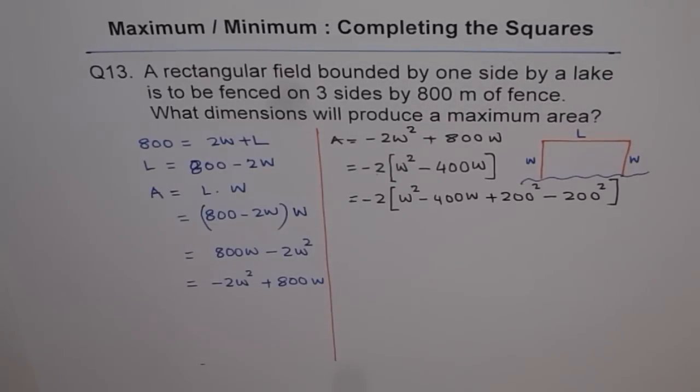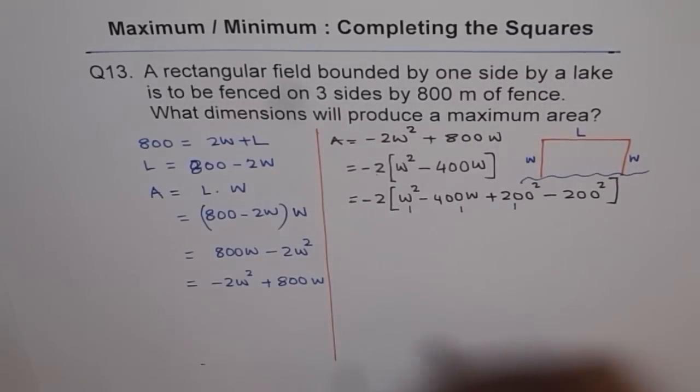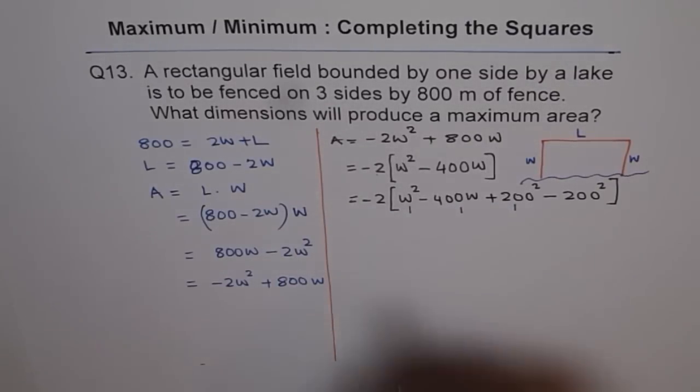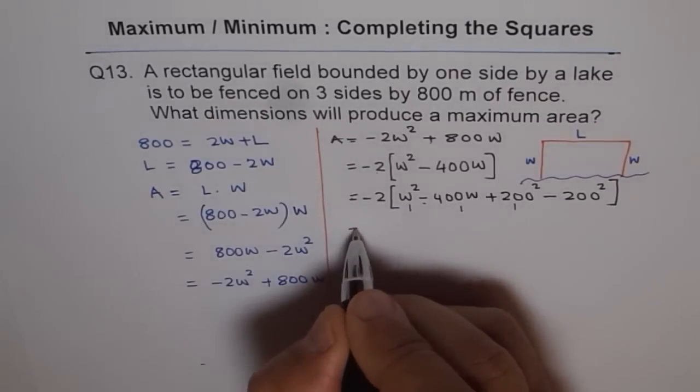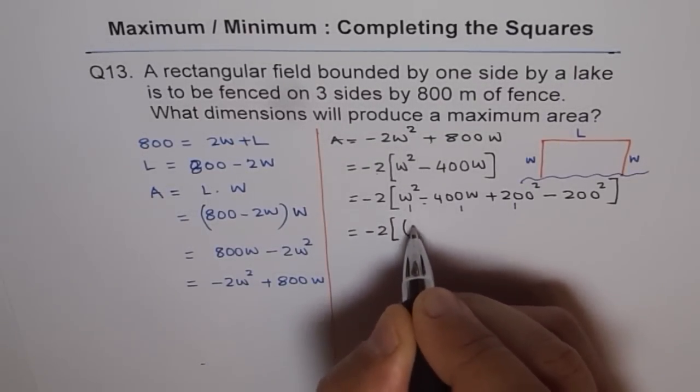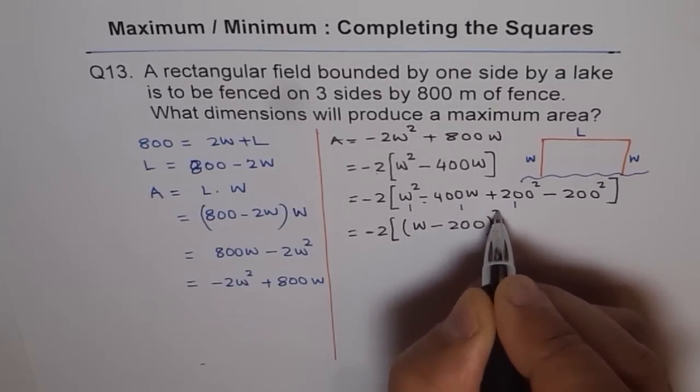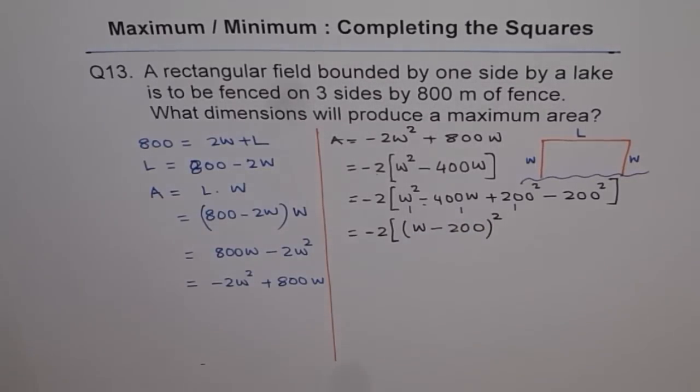But it makes one major change and that is these three terms form a perfect square with minus in between. This is what I am trying to say. So this is equal to minus 2 times W minus 200 whole square. So that three terms, this trinomial becomes a perfect square.